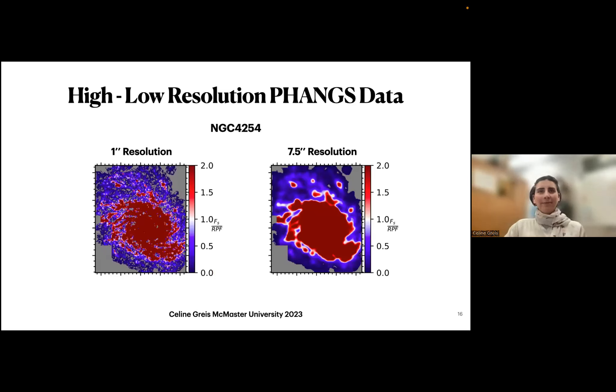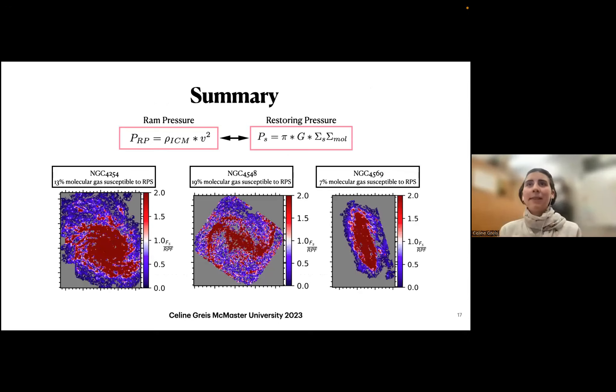That's kind of future work. I'm excited for that. That's actually already what I wanted to present today. You can see in my summary, again, the basic idea of our model that we compare ram pressure and restoring pressure. You can see how we modeled it. Those three galaxies out of 10 showed a significant amount of its molecular gas being susceptible to ram pressure stripping. I'm done a little bit early, but I hope it's OK.